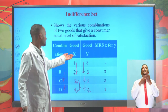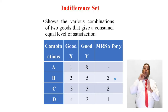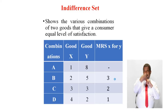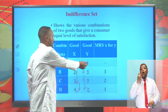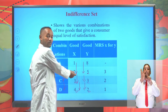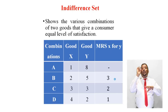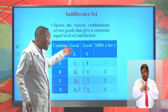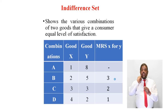Let's take X as orange and Y as banana. This indicates that the satisfaction we get from one orange and eight bananas is equal to the satisfaction from two oranges and five bananas, because as we increase consumption of oranges, we are declining consumption of bananas.